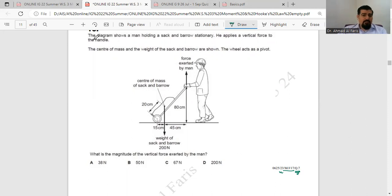This is a multiple choice question from Cambridge about moment. The diagram shows a man holding a sack and a barrow stationary. He applies a vertical force on the handle.